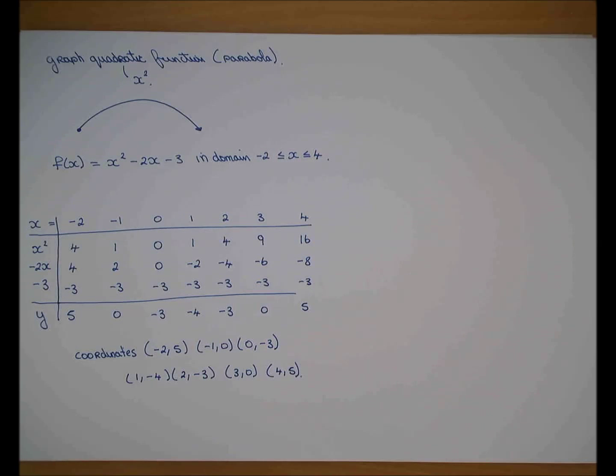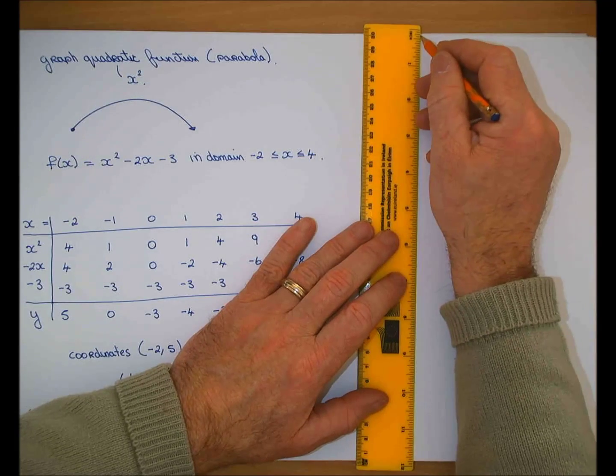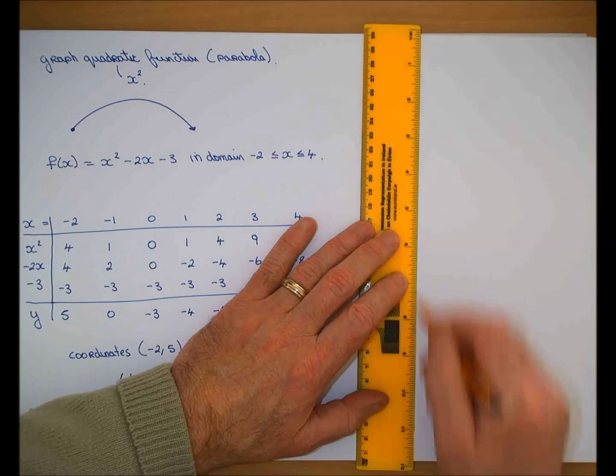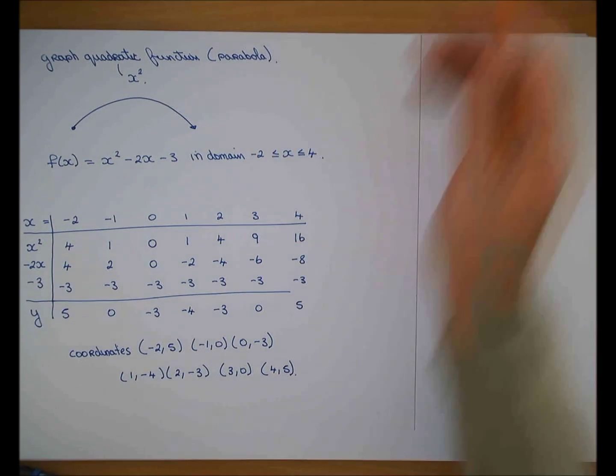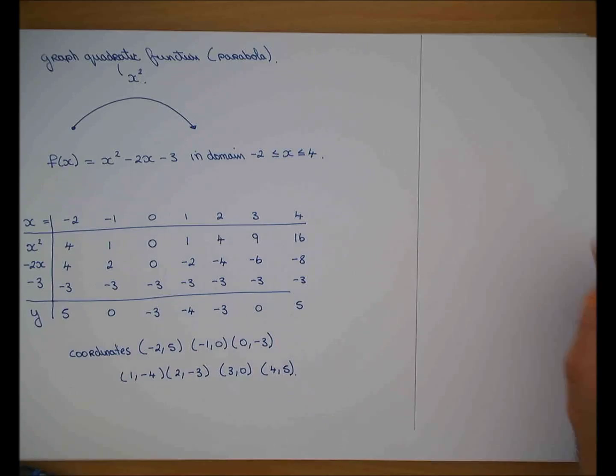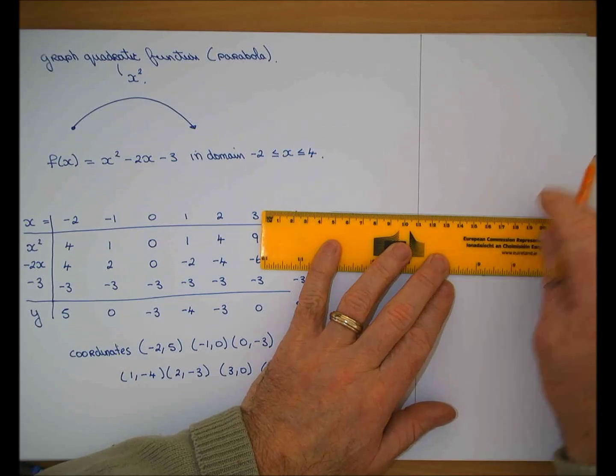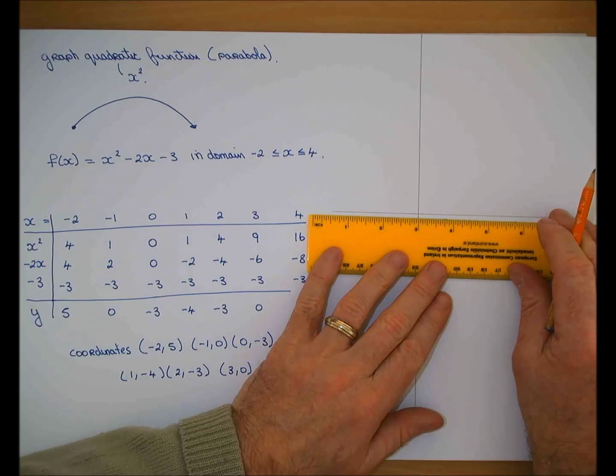I have to graph those now. So the x axis starts at what's the lowest x value? Minus 2. The biggest x value? 4. I may need more room on the negative side or the positive side. The y axis, the biggest value is 5 and the smallest is minus 4. So I can split it around the middle. I need a tiny bit more room on top than on bottom.